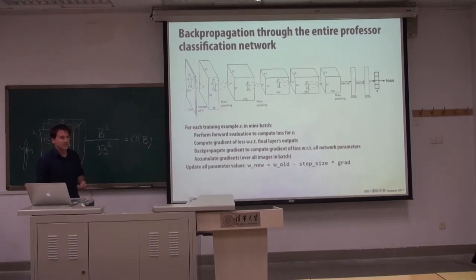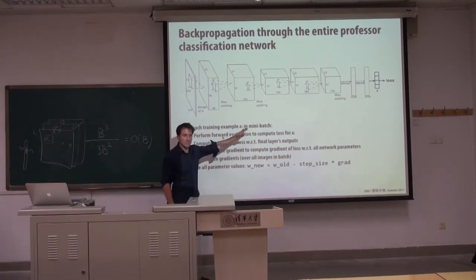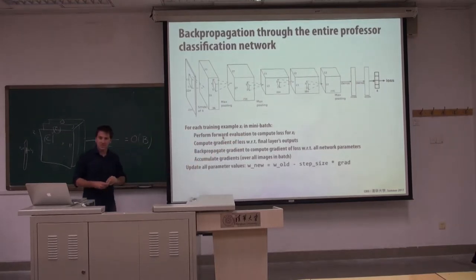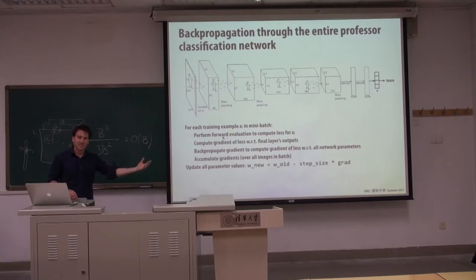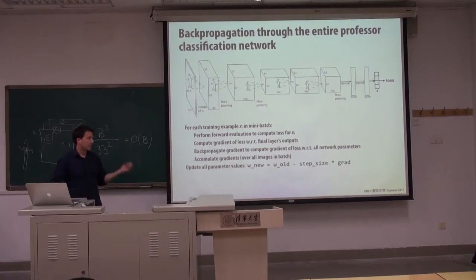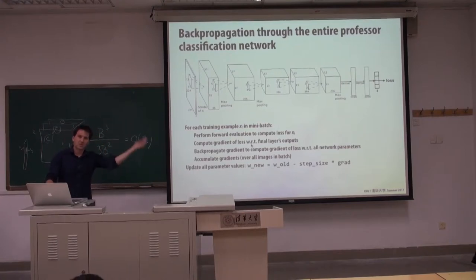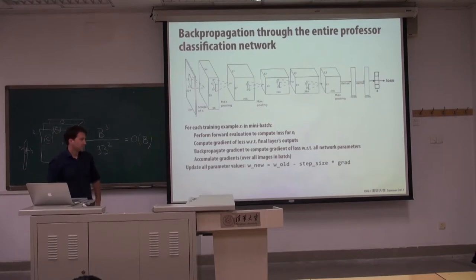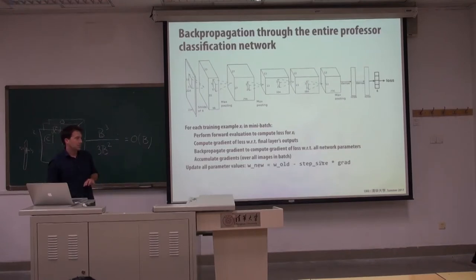Putting it all together, the training process for deep networks is: for every training sample, perform forward evaluation of the network efficiently to compute the loss — evaluate the network to get its prediction and compute the loss compared to the right answer. Then compute the gradient of the loss with respect to the last layer output, and keep multiplying by matrix transpose all the way back through the network to get gradients for input parameters w. Once you have the loss-parameter gradients, update all 100 million weights by adding those gradients times some step size.